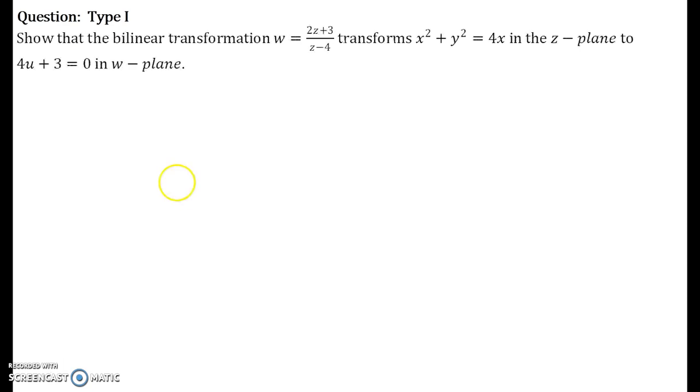Let us see what are the type of questions in this. This is one of the example. Show that the bilinear transformation w = (2z+3)/(z-4) transforms x² + y² = 4x in z-plane to 4u + 3 = 0 in w-plane.